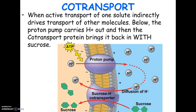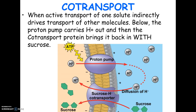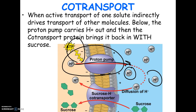Co-transport is where two proteins work together. The pump that carries sucrose does not require ATP directly — you don't see any ATP for it — but in order for it to work, sucrose can't get in unless hydrogen also binds with it. So another pump, the proton pump, uses ATP to bring the hydrogens over so they can go through. Even though the sucrose carrier doesn't need ATP directly, if the proton pump shut down, the sucrose carrier would shut down too.